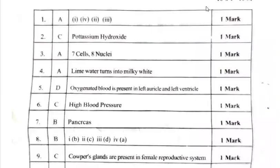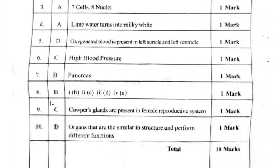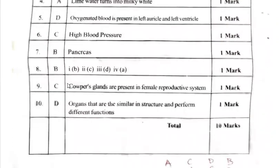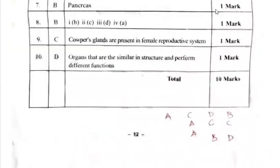For the sequences section, the answers are: first A, second C, third A, then A, D, C, B, B, C, D. Here are the total points and total marks. I hope you enjoyed this session. Analyze your marks and see you in the next video. Thank you.